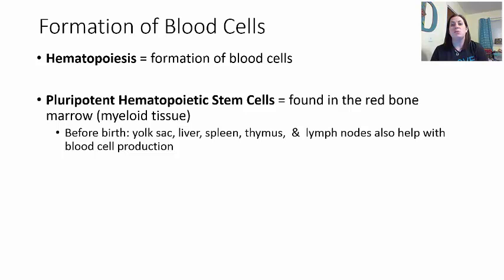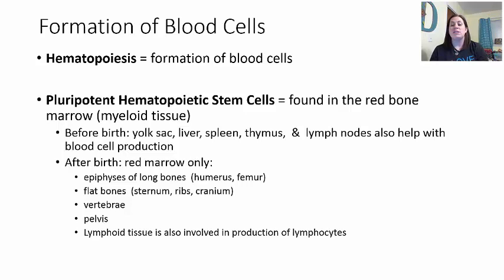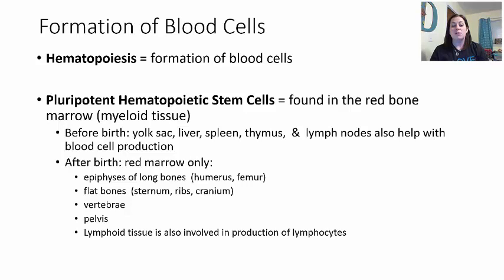You have stem cells right now inside your bone marrow—it's just harder to access them. Before birth, this myeloid tissue is found in the yolk sac, liver, spleen, thymus, and lymph nodes. After birth, a shift occurs: those other structures take on different jobs, and the red bone marrow becomes the only site containing these stem cells for blood cell formation—found in the epiphysis of long bones like the humerus and femur, flat bones like the sternum, ribs, and cranial bones, vertebrae, pelvic bones, and lymphoid tissue for lymphocytes.